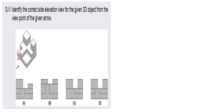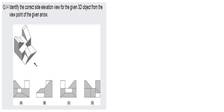For the next orthographic projection question, we need to identify the view along the given arrow direction. The object has an inverted T-section with rectangular extensions on both sides at the same height. Option A is eliminated because the extensions are not at the same height. Option B has a T-section that is too long. Option C has no T-section at all. Option D correctly shows the T-section with both rectangular extensions at the same level, so option D is the right answer.